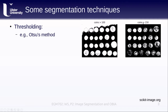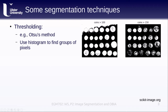If we pick a higher threshold, such as 150, we see that we're getting less of the coins, but we are at least separating them effectively from the background. These are methods where we're using the histogram of the image in order to help find groups of pixels that we can identify.